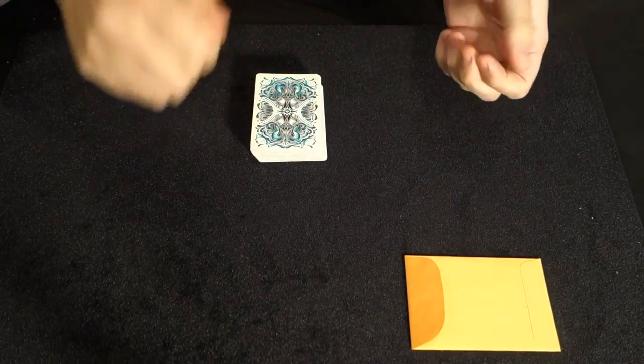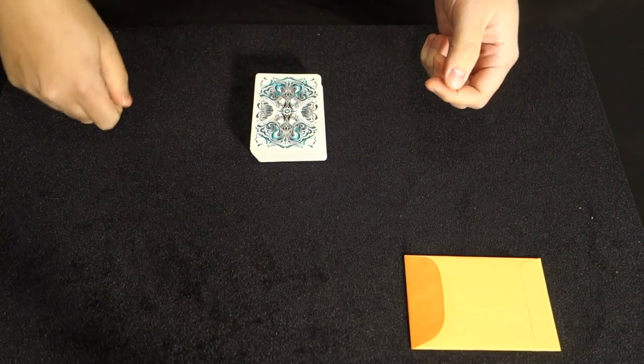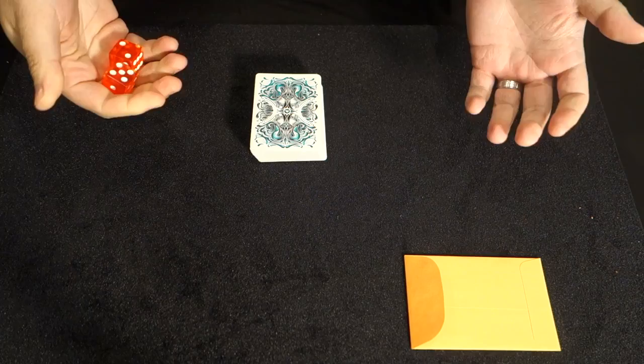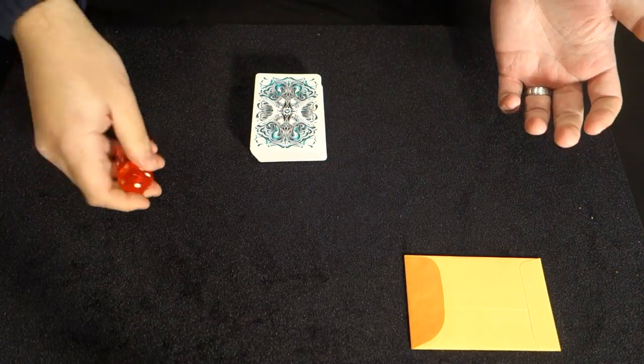So what we're going to do is we're going to roll the dice. And whatever number you land on, we're going to count down to the card at that position in the deck. And whatever card that is, we'll use that for the back design. And then we'll do that again for the value.